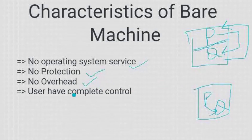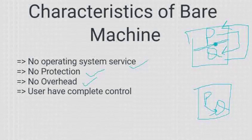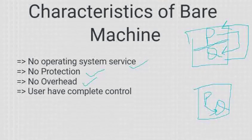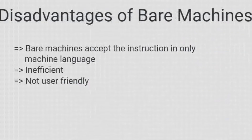Users have complete control — bare machine में P और Q के पास complete controls हैं। जबकि partitioned system में उनके पास limited controls होते हैं, उन्हें operating system से, kernel से permission लेनी होती है, उसके बाद वो operations करते हैं। But bare machine में उनके पास complete control है। So this was bare machine।